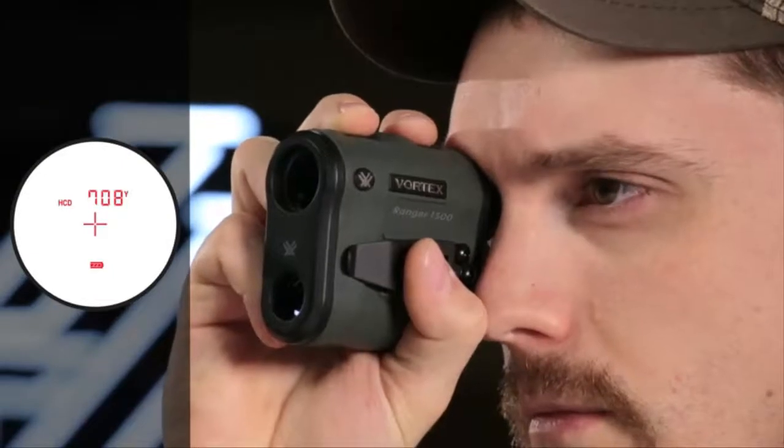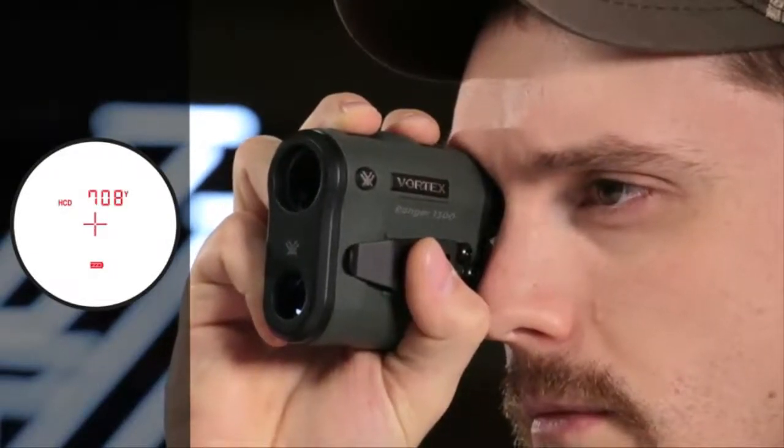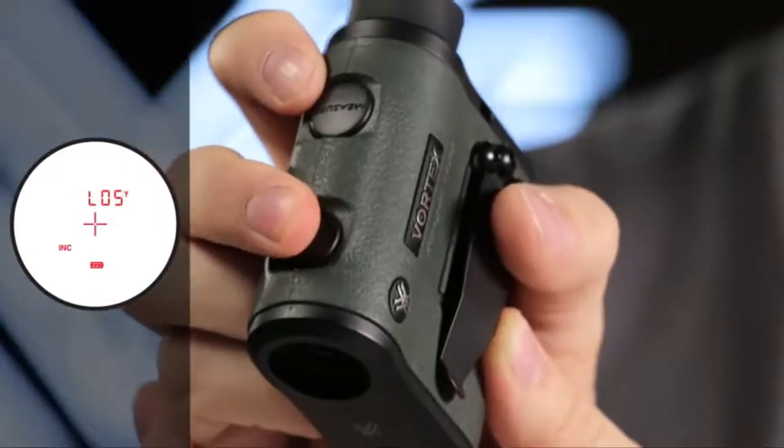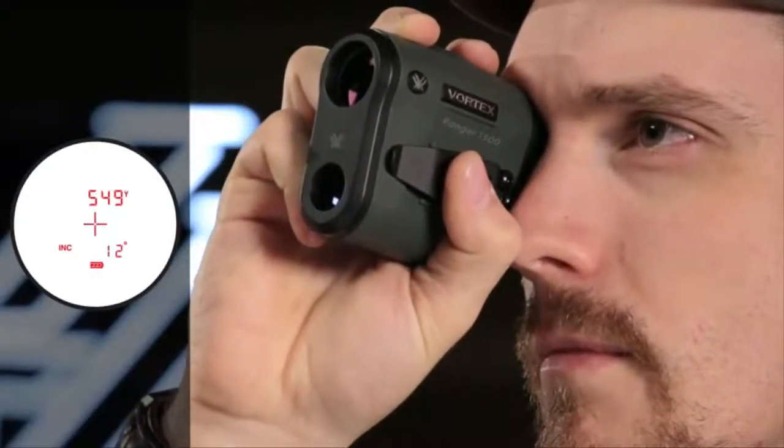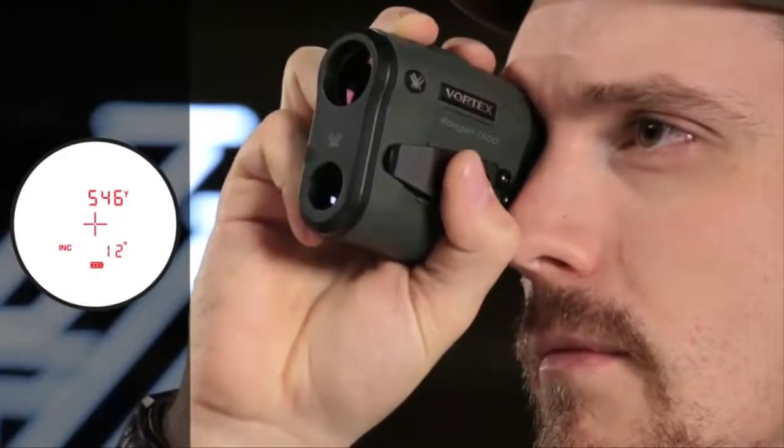The primary HCD mode displays an angle compensated distance that is ideal for the majority of hunters and shooters. An advanced LOS mode provides you the option to calculate long distance, high angle shots with increased precision.